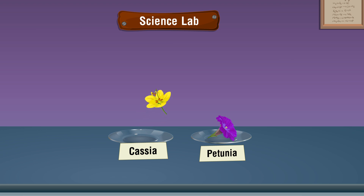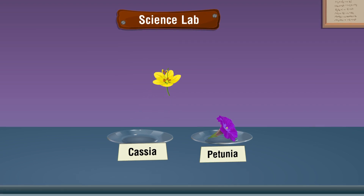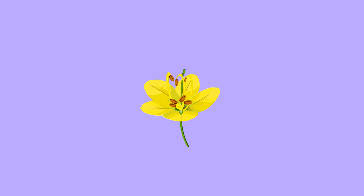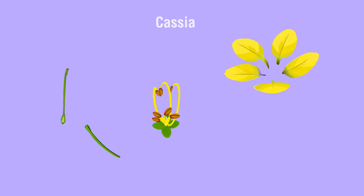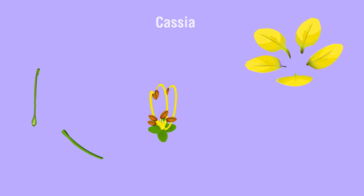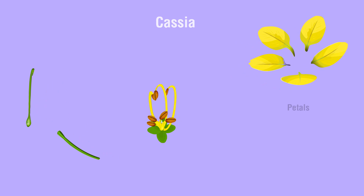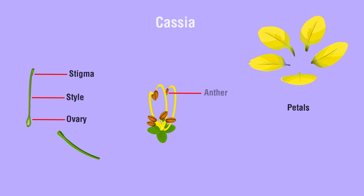Similarly, a few other flowers have similar features, such as cassia. Let's take the count of each whorl in the cassia flower. The cassia flower comprises five petals. Stigma, style, and ovary constitute the pistil. Anther and filament constitute the stamens.